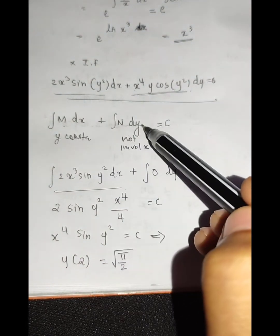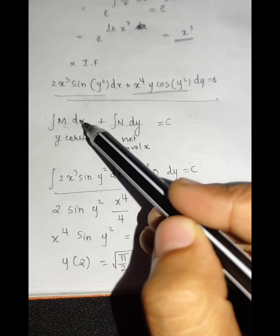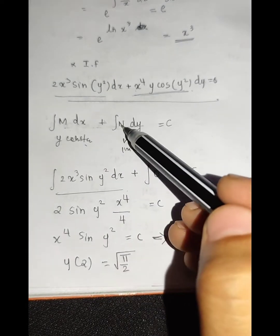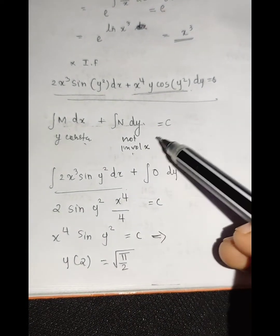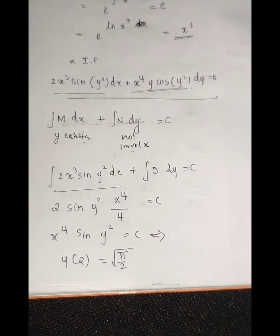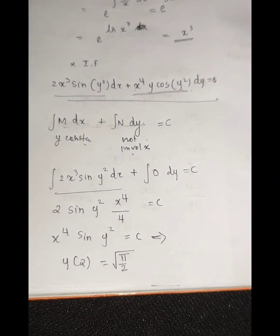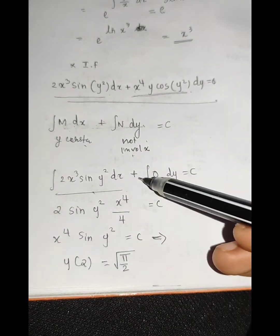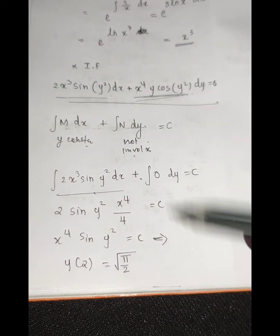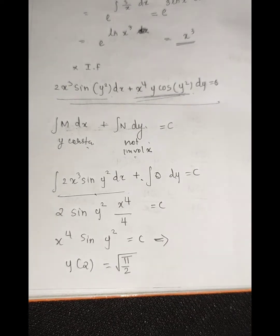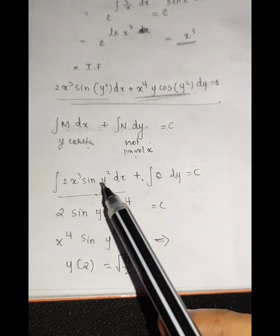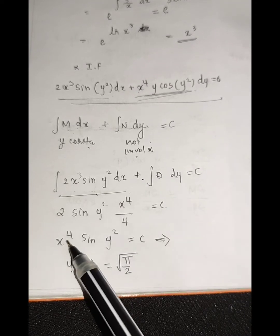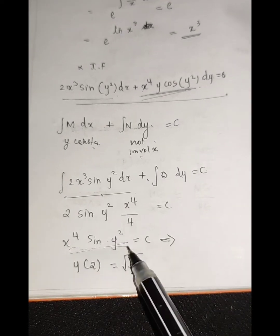After multiplying by x³ we get 2x³ sin(y²) dx plus x⁴ y cos(y²) dy equals 0. We then apply the standard solution: integral of M dx with y constant, plus integral of N terms not involving x, equals c.